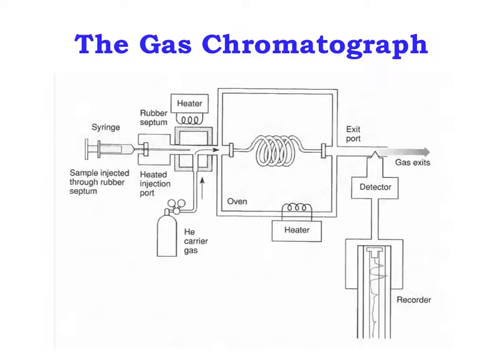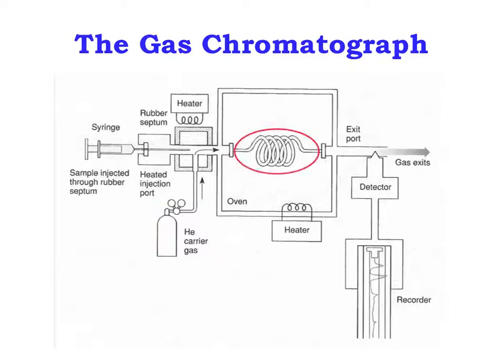An integral part of the instrument is the carrier gas, which is typically helium, nitrogen, or argon. Do you remember its purpose? If not, back up and review the earlier slides. Once vaporized, the sample enters the heated column, where the components in the sample equilibrate between the liquid and vapor phases.